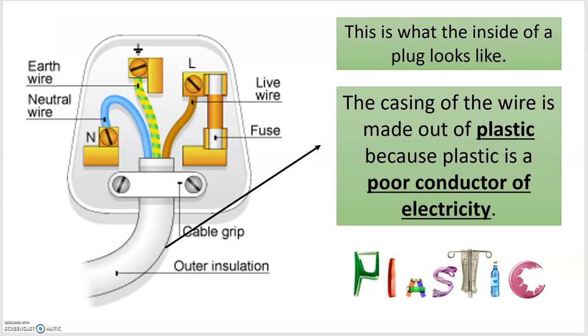What does the inside of a plug look like? It has the three different wires we just explained, a cable gripper to keep the wires in place, and outer insulation. That's the wire you normally see when you plug your appliances in.